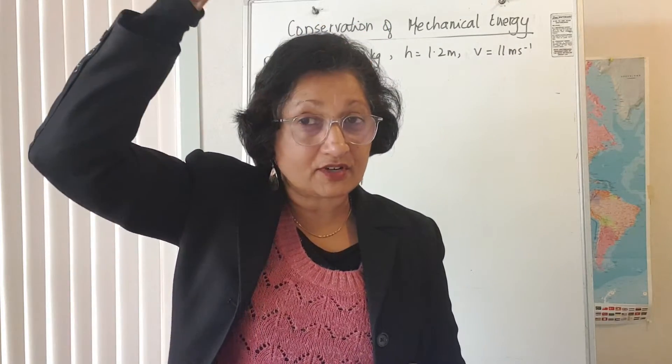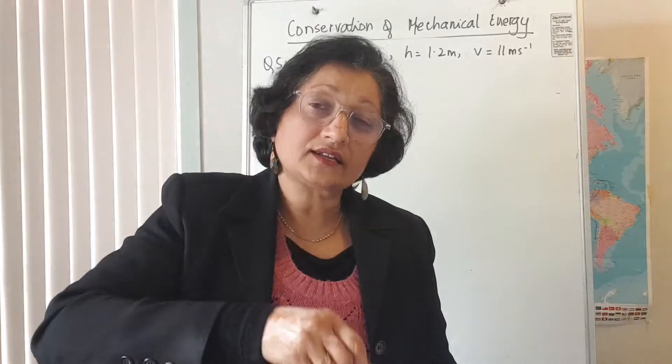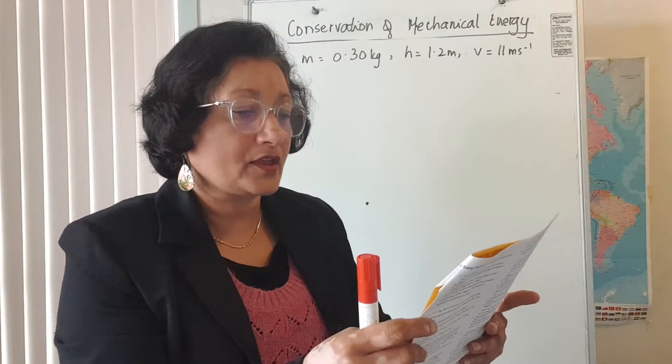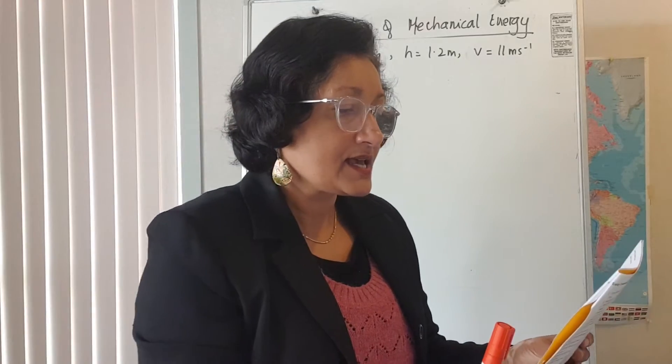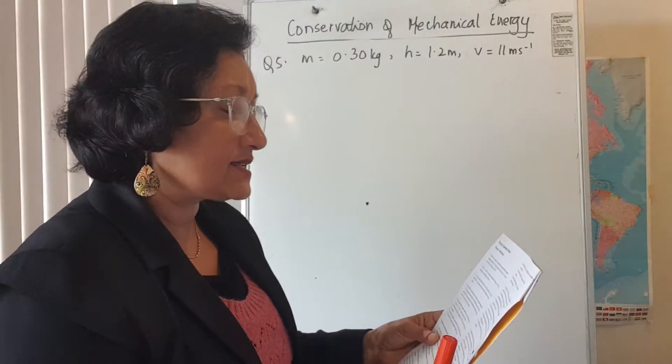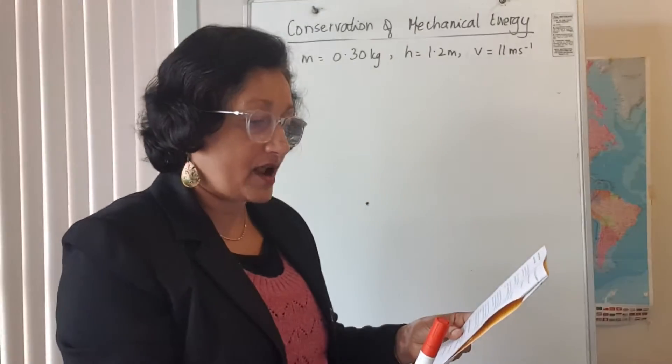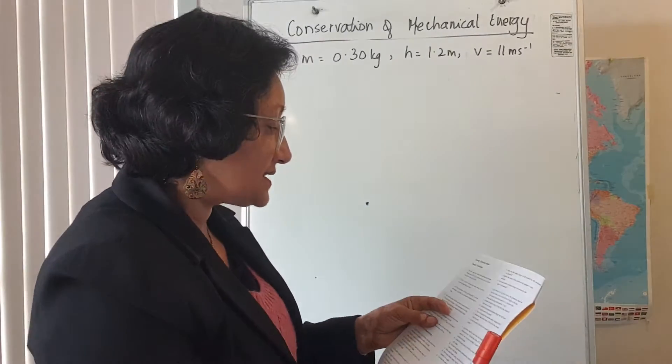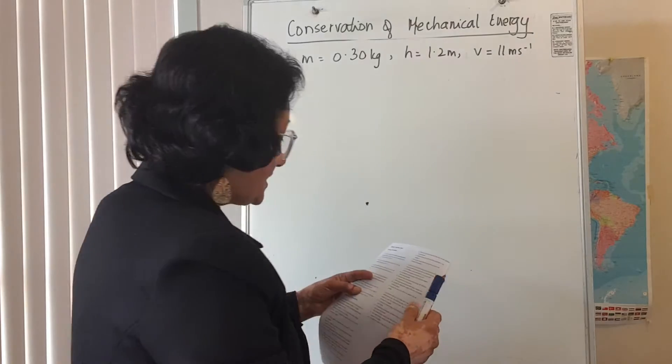She's throwing it as hard as she can to make the ball go really high once it bounces. At the instant it leaves her hand it's 1.2 meters above the ground and it's traveling downwards at 11 meters per second. So the first thing we have to do is calculate the kinetic energy of the ball at the instant it leaves the girl's hand.